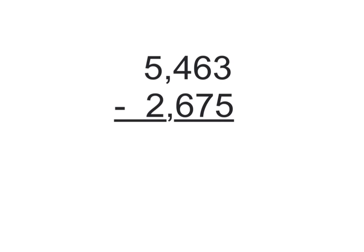First, just to model this equation of 5,463 minus 2,675, I'm going to ungroup from right to left, basically in a standard algorithm kind of way, just so we can see how the original way works.